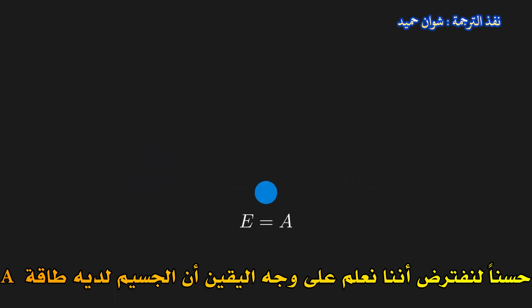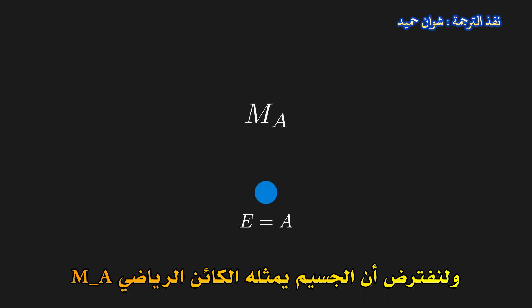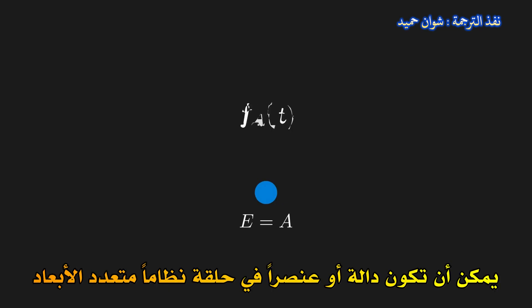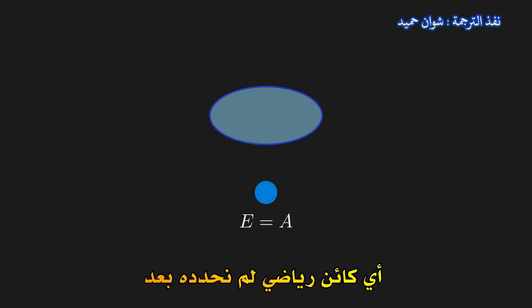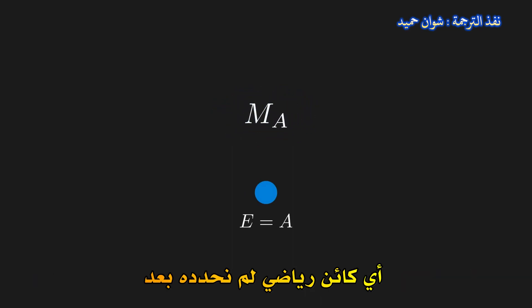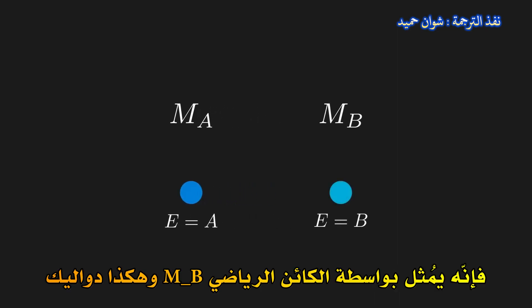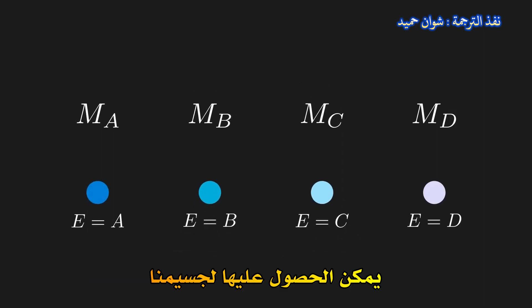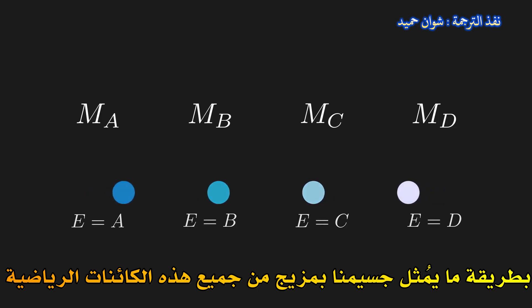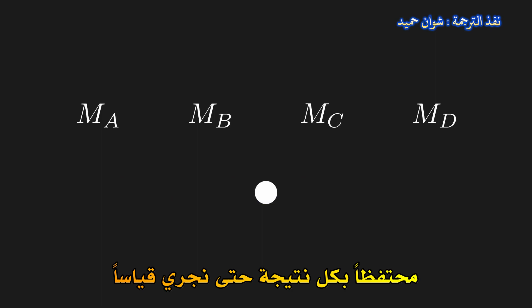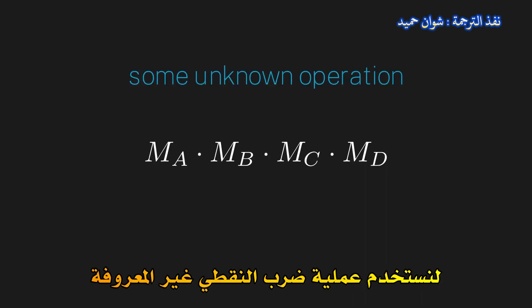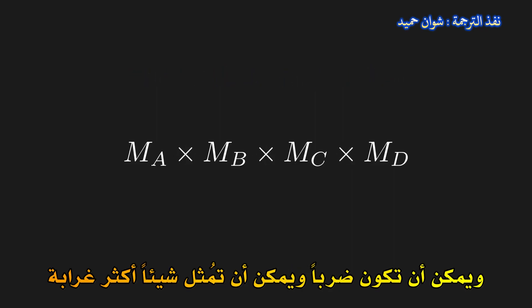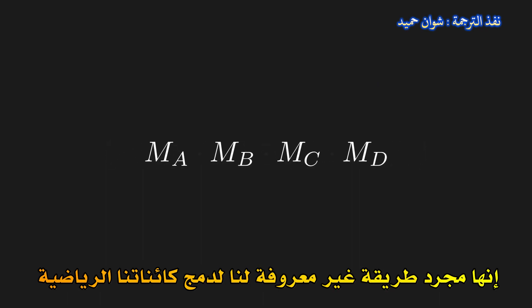Let's say that we know for sure that the particle has energy a, and let us say that the particle is represented by the mathematical object m_a. Now m could be anything — it could be a function, an element of a ring, a manifold — just some mathematical object that we have yet to determine. If the particle has energy b, then it is represented by mathematical object m_b, and so on and so forth. So we have a mathematical object m for every possible outcome we could get for a particle. Somehow our particle is represented by an amalgamation of all these mathematical objects, holding on to each outcome until we make a measurement. Let's use some unknown dot operation — this could be addition, multiplication, or something even more exotic — just some unknown way to combine our mathematical objects into one aggregate object that describes our particle before the measurement.